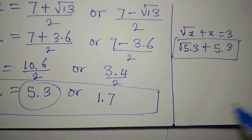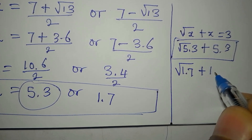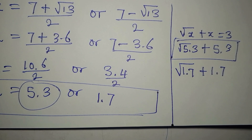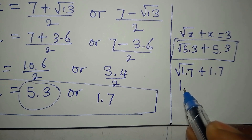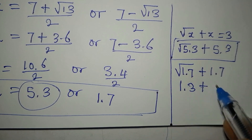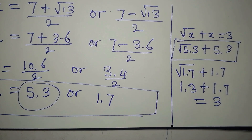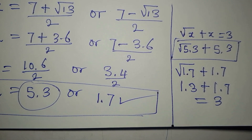Let's check x equals 1.7: we compute square root of 1.7 plus 1.7. The square root of 1.7 is approximately 1.3, and 1.3 plus 1.7 gives us 3, which matches the right-hand side. So x equals 1.7 is the valid solution that satisfies the equation.